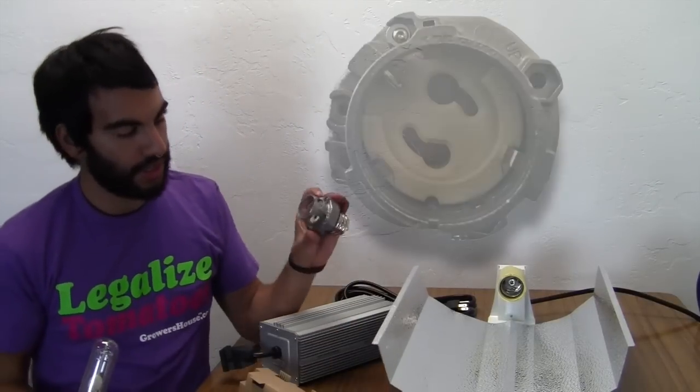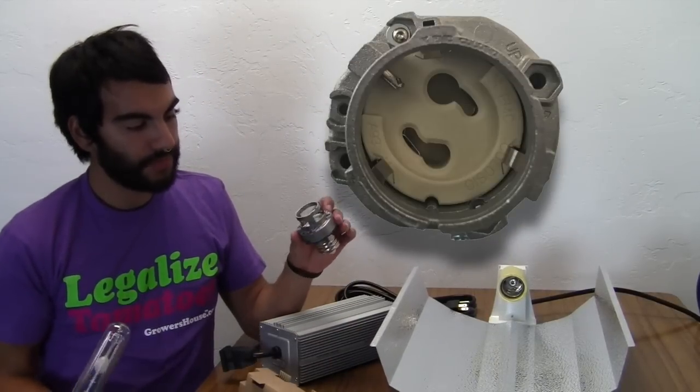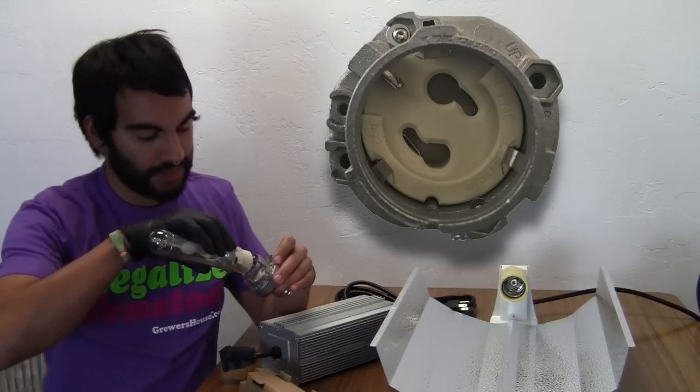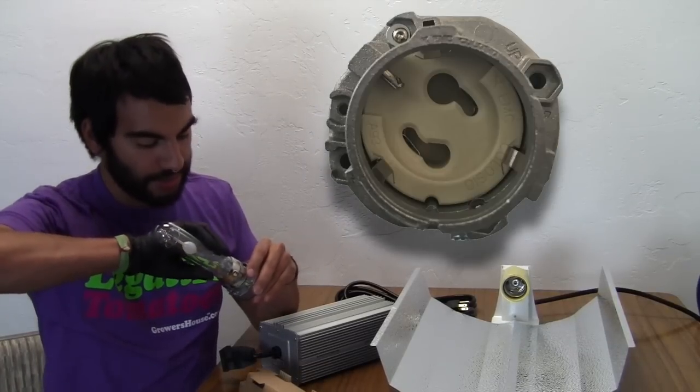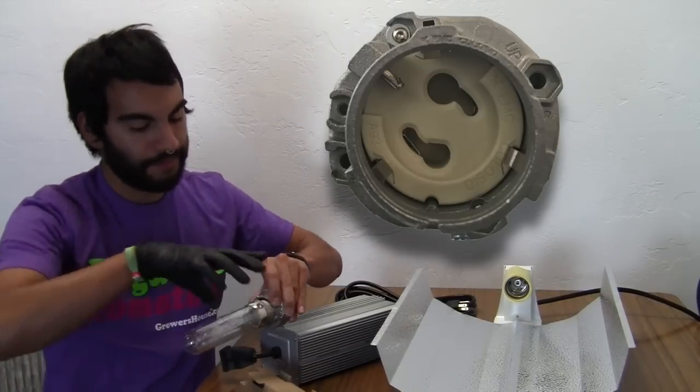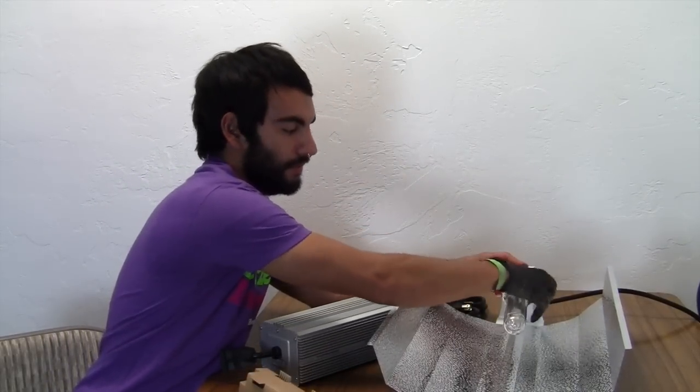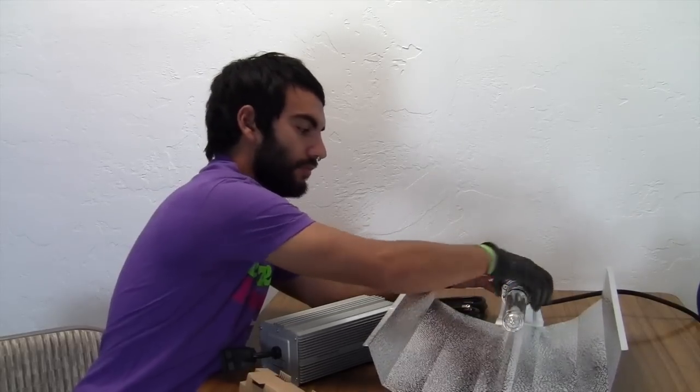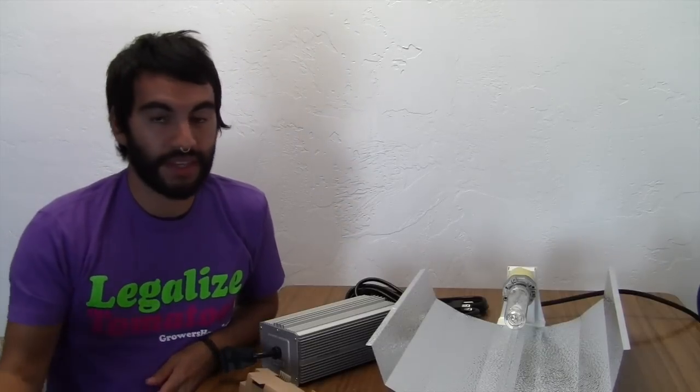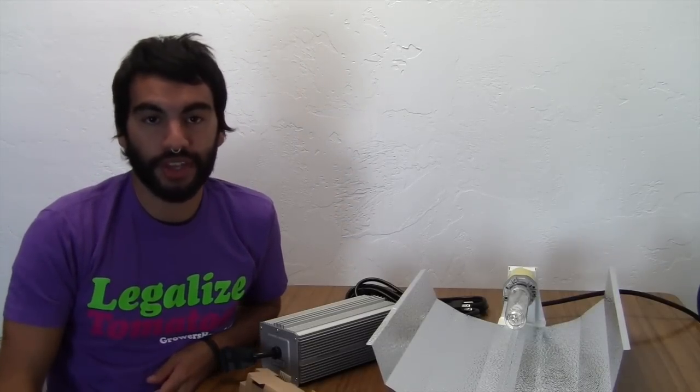So essentially you just take this socket adapter and you can take your 315 bulb and put it in this adapter, turn it in, and then simply screw it into your mogul adapter. And there you go. You have a 315 watt bulb inside of any traditional fixture that you've ever used.